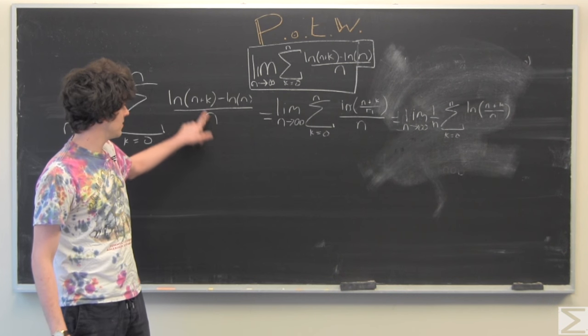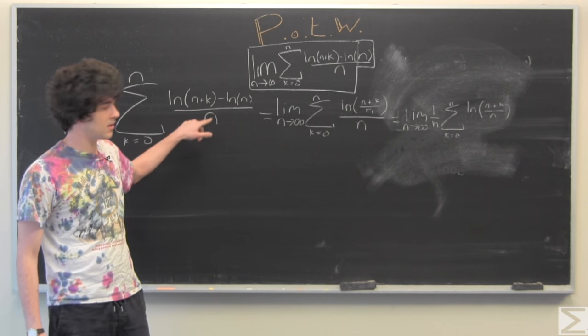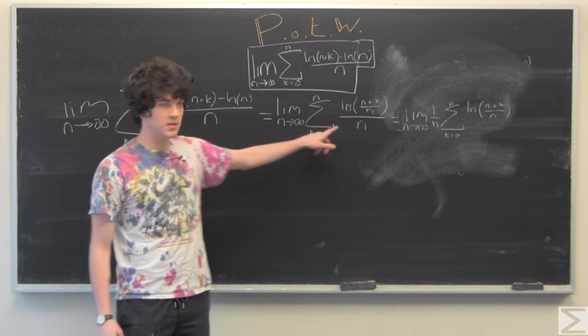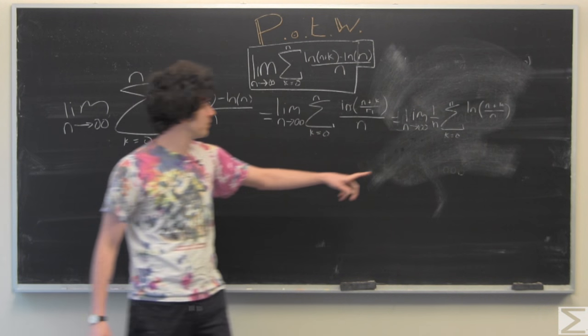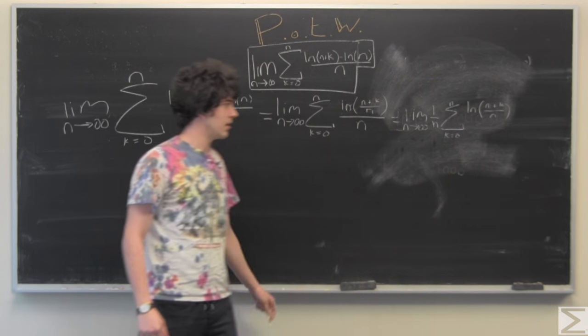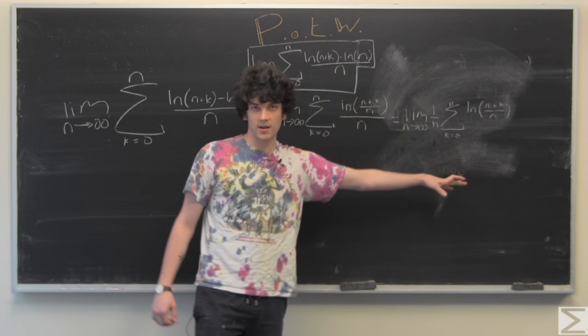What we've done is simplified this log, and since this 1 over n does not depend on our index k, we have pulled it out of the sum, and this 1 over n will act on the entire sum.